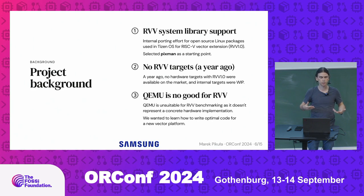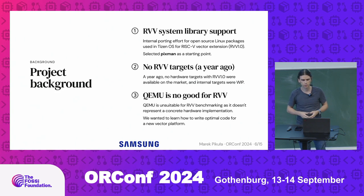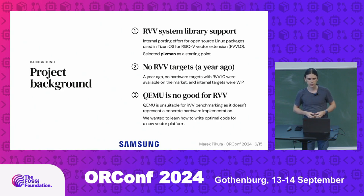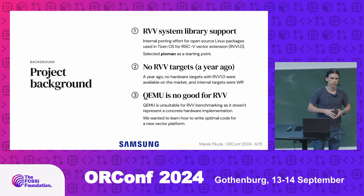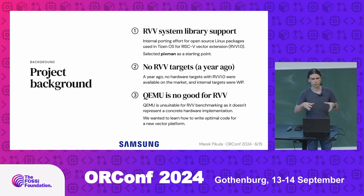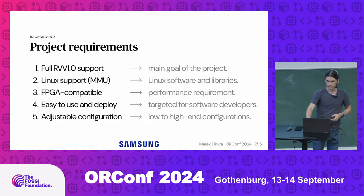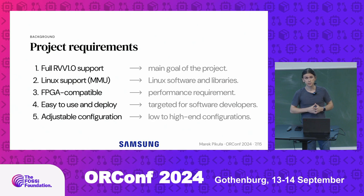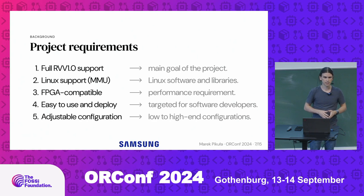QEMU is fine for verification but no good if you want to really explore the platform in terms of how it performs — like comparing different algorithms, seeing if this assembly works better than that. You can transfer some knowledge from vector extensions on other platforms, but RVV is really special in some ways. As a project we chose PIXMAN, which is a pixel manipulation library used by Cairo and Chromium. It has really well-compartmentalized vector code.